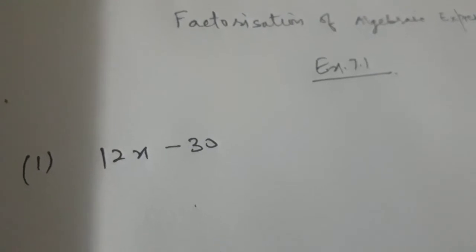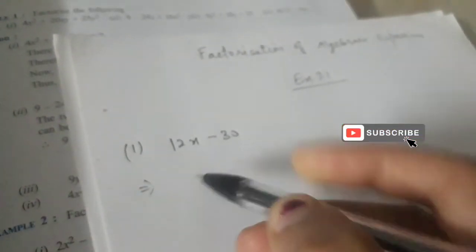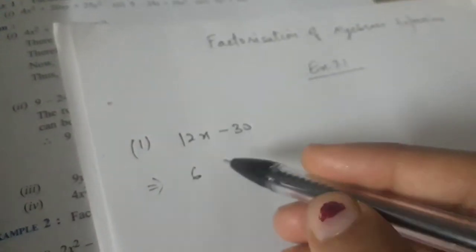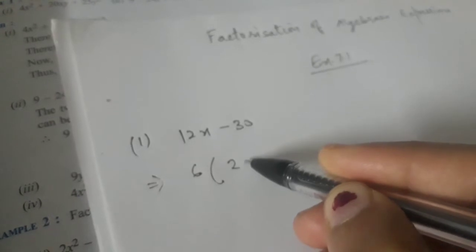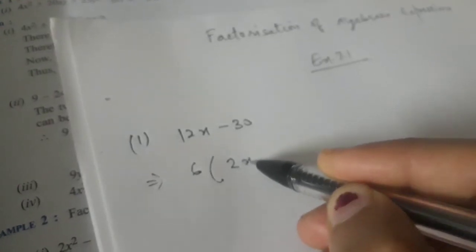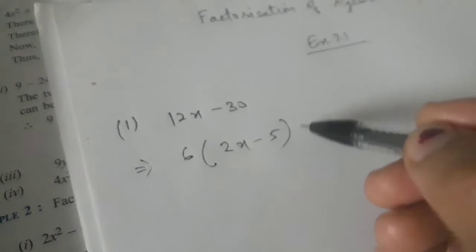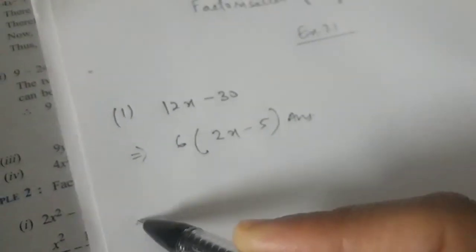In question number one we have to factorize 12x minus 30. We will take 6 as common, so within the bracket we will be left with 2x minus 5. That is, 6 times 2 is 12x, and 6 times 5 is 30. So 6(2x minus 5) would be our answer.